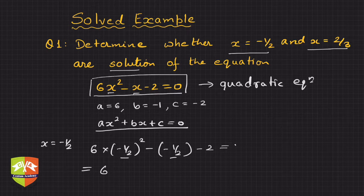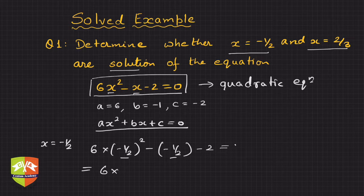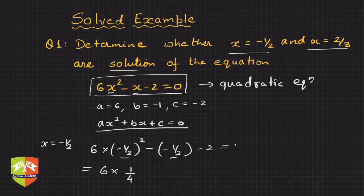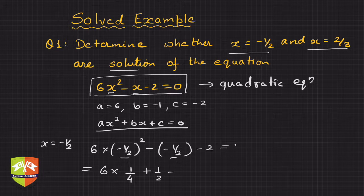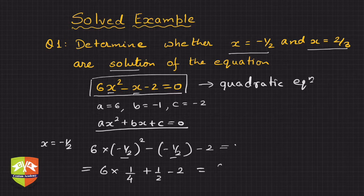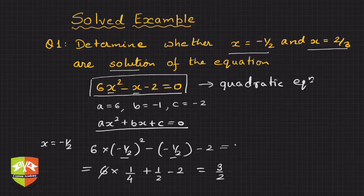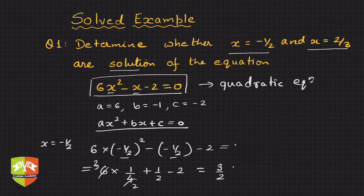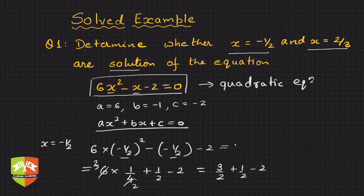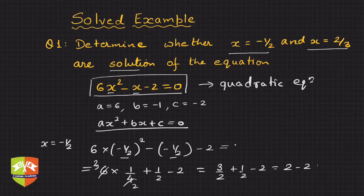This is 6 × 1/4, and then minus minus half is plus half, minus 2, which is 3/2. So 3/2 + 1/2 - 2, which is 2 - 2, which equals 0, equal to RHS.